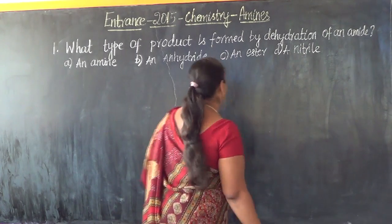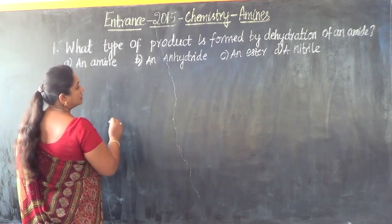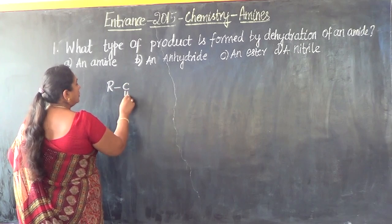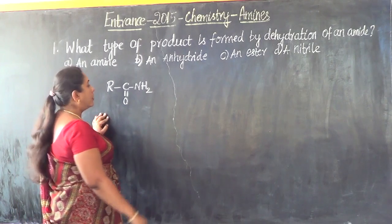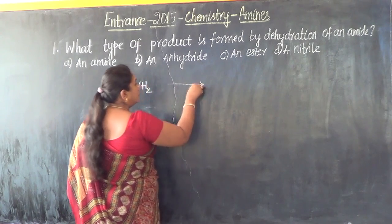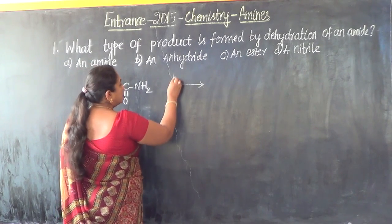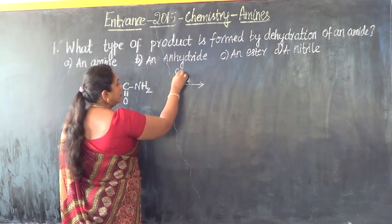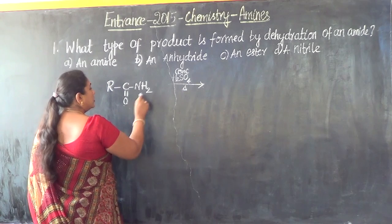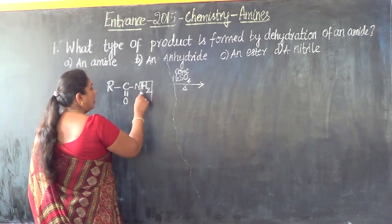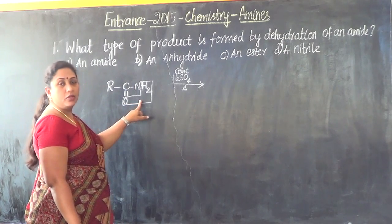Organic cyanides are called nitriles. Let us write a general reaction and check. The general formula of an amide is R-CO-NH2. When subjected to dehydration using a dehydrating agent such as concentrated H2SO4 or phosphorus pentoxide and upon heating, the H2 of the amine group combines with the O of the carbonyl group, resulting in the elimination of water.